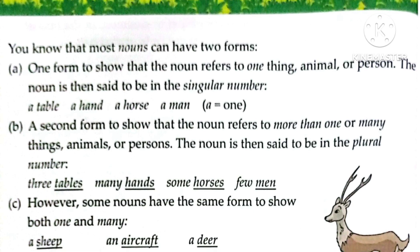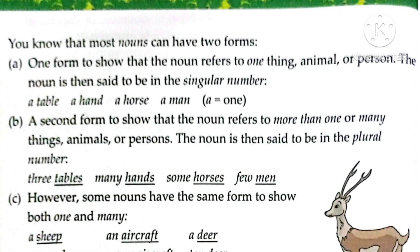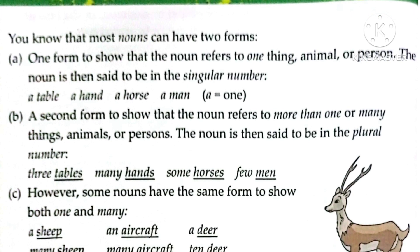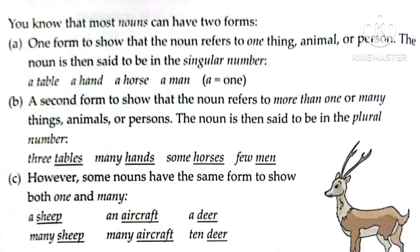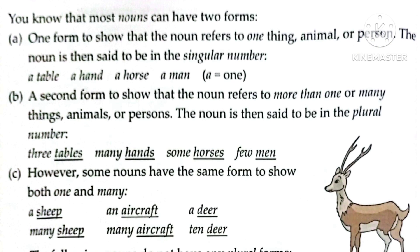In the singular form, we write: a table, a hand, a horse, a man. Here, 'a' is equal to one — it indicates a single thing.